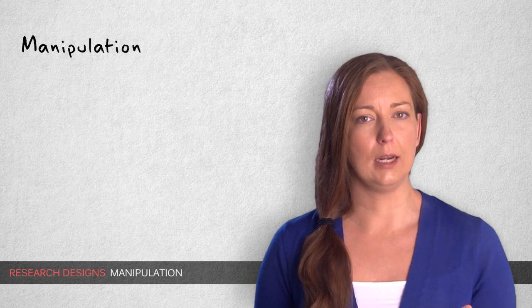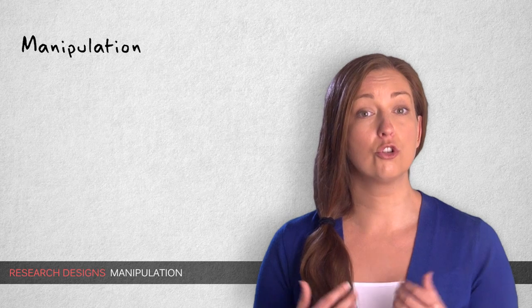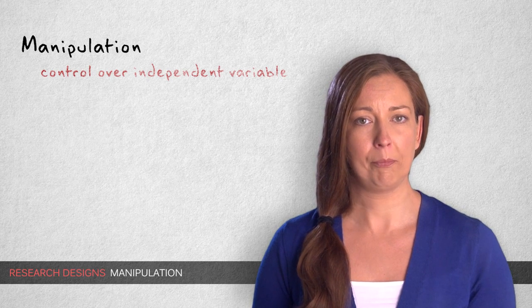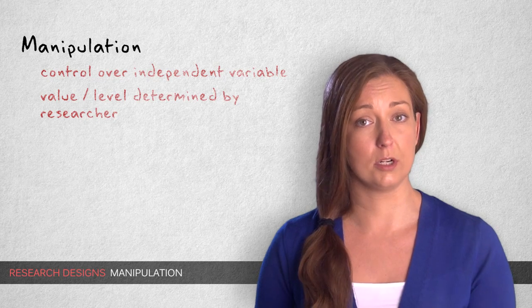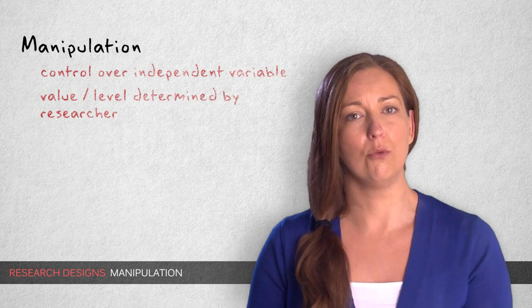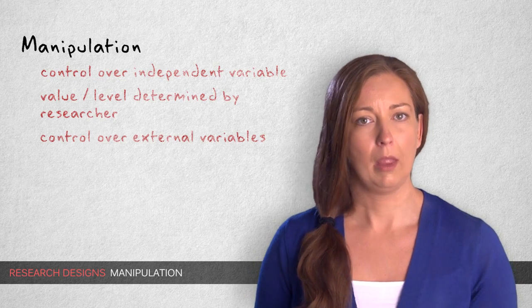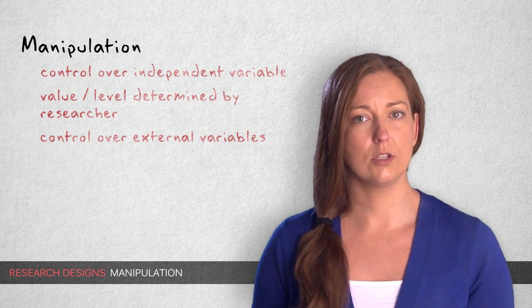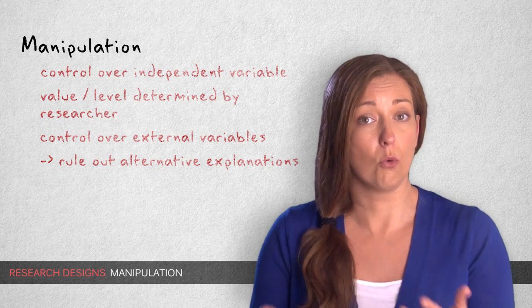Manipulation is one of the essential ingredients of a true experiment. Manipulation generally refers to control over the independent variable. In a true experiment, the value or level of the independent variable that a participant experiences is determined, or manipulated, by the researcher. It also helps to control external variables. By keeping variables of disinterest constant, we can rule out any alternative explanations they might have otherwise provided.